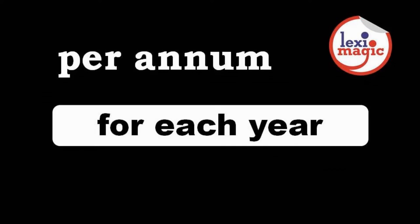Per annum means 'for each year.' For example, a population increase of 10% per annum refers to a 10% increase every year.